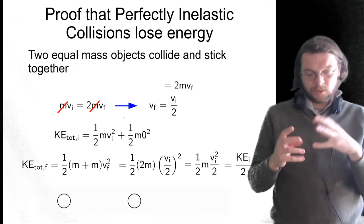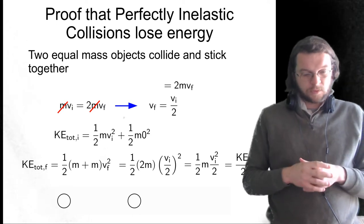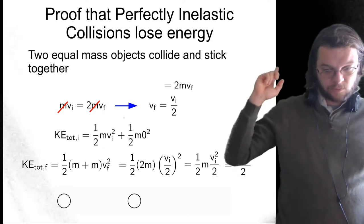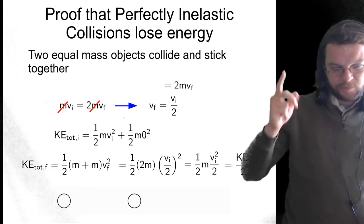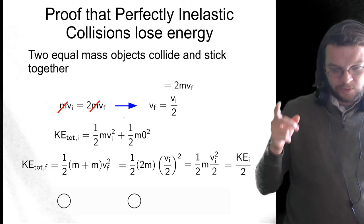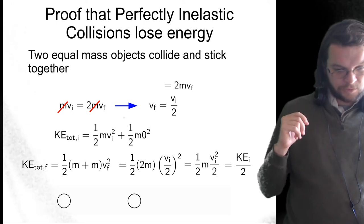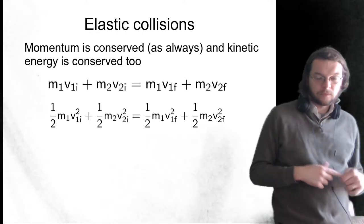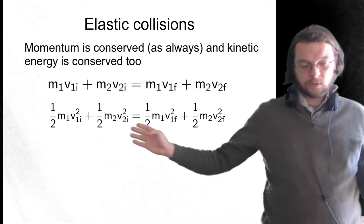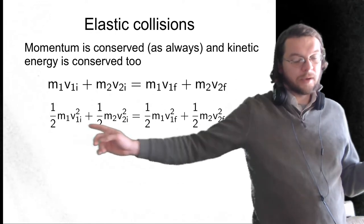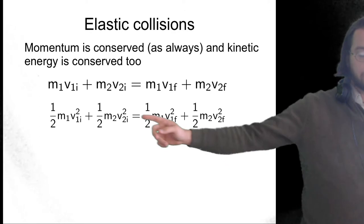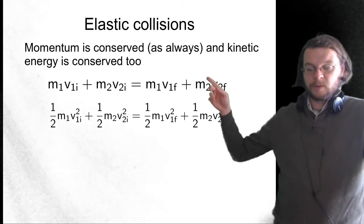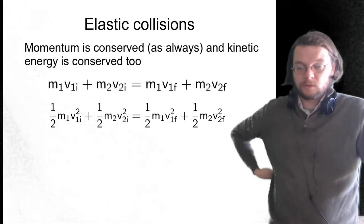So the point is: when I ask on a multiple choice question whether perfectly inelastic collisions lose energy after the collision — yes, they do, and it's not hard to see that's true. Of course, that's not true for the other collision types. Elastic collisions, for example: if you add up the kinetic energies initially, it's going to be the same as the sum of the kinetic energies after the collision. And of course, momentum is also conserved — momentum is conserved for all three of these collision types.